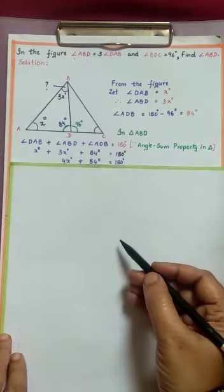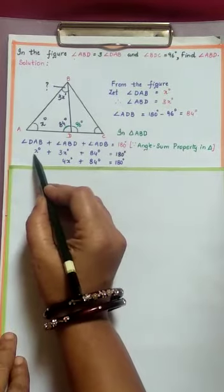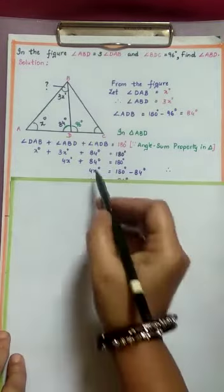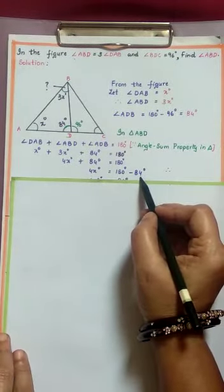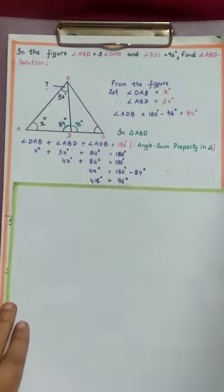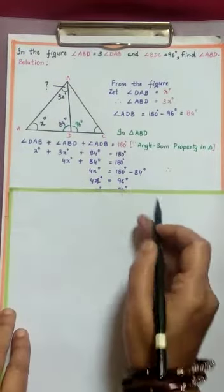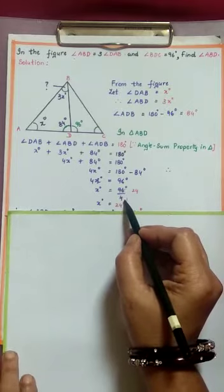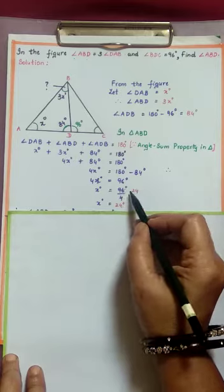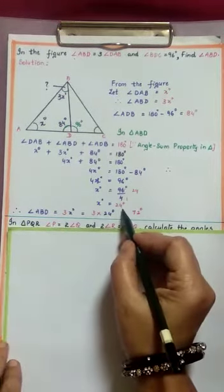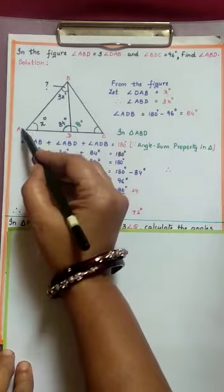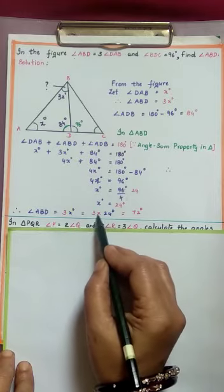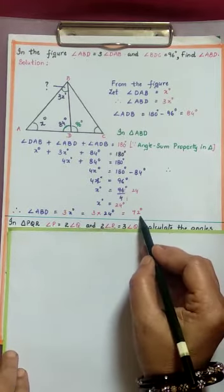Adding X and 3X gives 4X. So 4X plus 84 degrees equals 180 degrees. Transposing 84 to the right side: 4X degrees equals 180 degrees minus 84 degrees, which is 96 degrees. Dividing by 4: X equals 24 degrees. Since angle ABD is 3X degrees, that is 3 times 24, which gives 72 degrees.